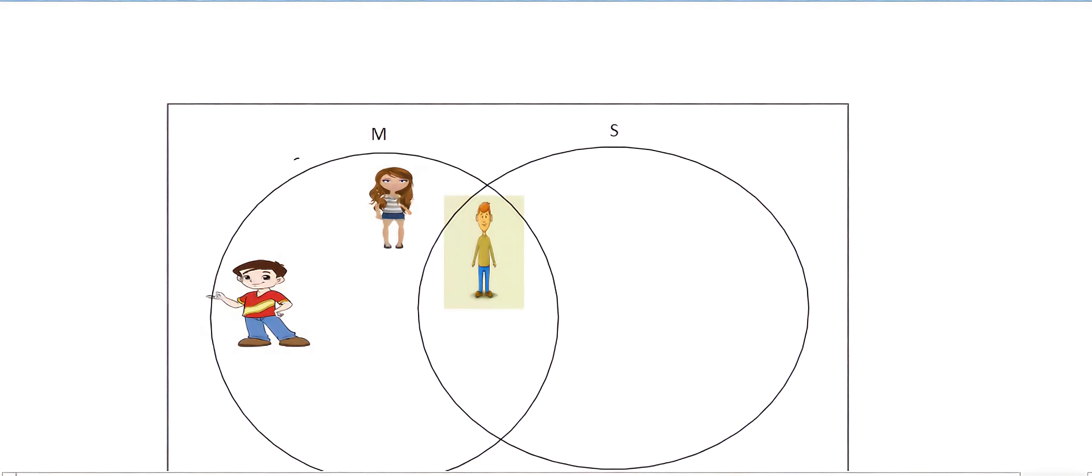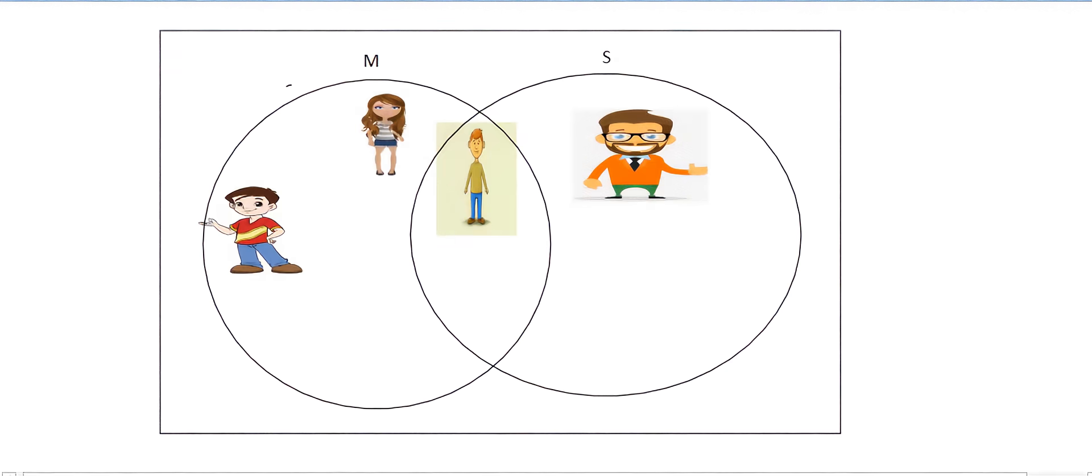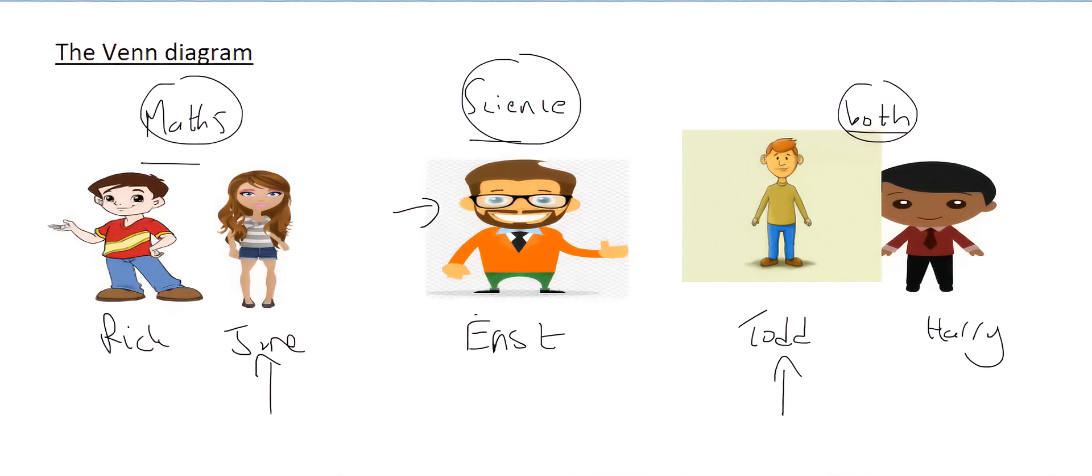Okay, now we'll go fetch the other two people. So we'll take Ernest next. Now Ernest, he's a science guy. He doesn't do any maths, he just does science. So he gets placed on the outside circle like that, because as soon as he goes in here, then he's inside the maths circle as well. But he doesn't do maths, so he's only inside the science circle.